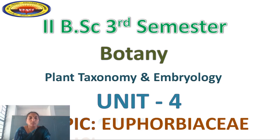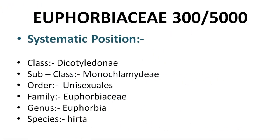What is the systematic position of Euphorbiaceae? It includes Class Dicotyledonae. Subclass Monochlamydeae — where sepals and petals are united to form a new structure called Perianth. Next, Order Unisexuals — sexual reproductive organs are either male or female flowers. Family Euphorbiaceae; the major genus is Euphorbia, hence the family Euphorbiaceae. Species is Heta.